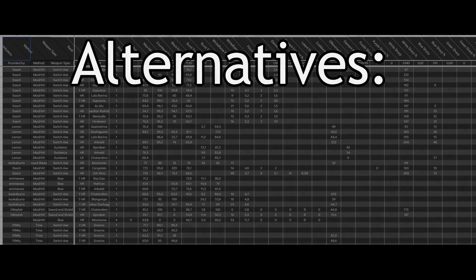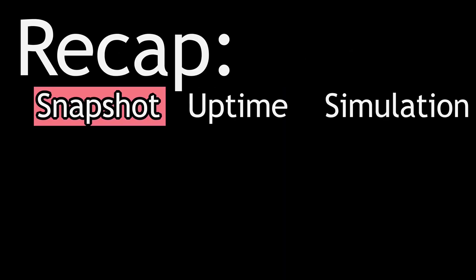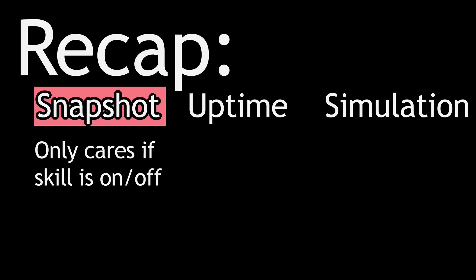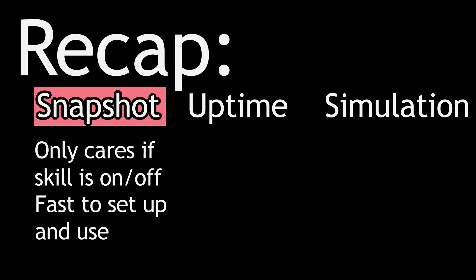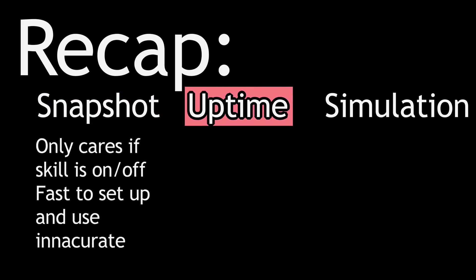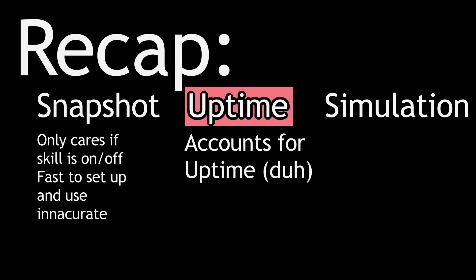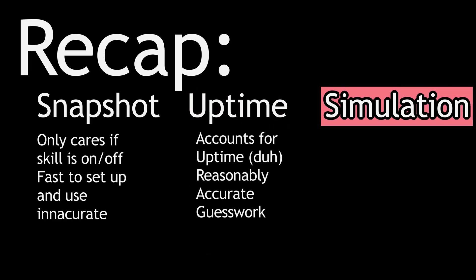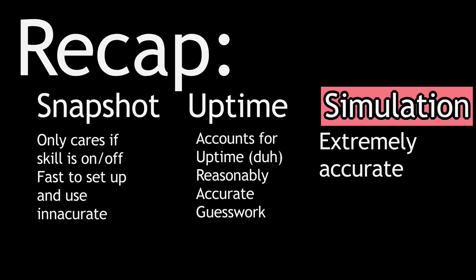To recap, there are three options for calculation. Snapshot calculations only care if a skill is currently on or off — very good for fast results and a general overview of a set's min and max performance, but not very accurate when calculating for others. Average calculation accounts for uptimes and conditionals — good for reasonably accurate average results, especially when building for the purpose of a guide, but with the downside of having to assume uptimes. And simulations, which are extremely accurate and useful, but also extremely time-intensive to set up and alter.